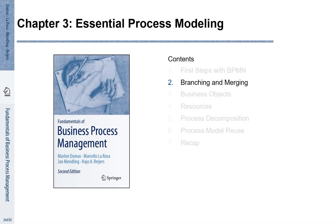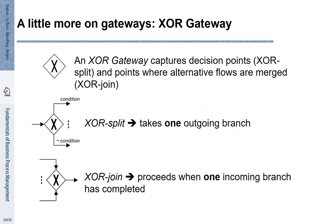Chapter 3, Section 2: Branching and merging. In BPMN, branching and merging is described by the help of gateways. Let us first look at the so-called XOR gateway.